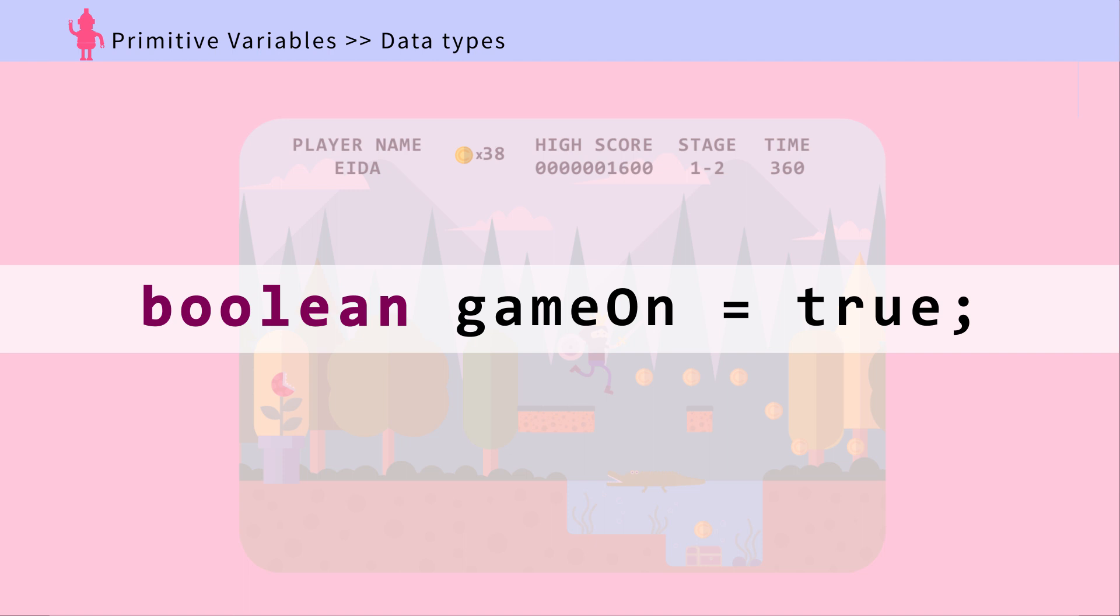By declaring a variable, you can start using it. Declare a variable by putting variable type, name of the variable, then equal sign followed by its value. Note that the equal sign here is different from how it is used in math. The equal sign here assigns the value to the variable.